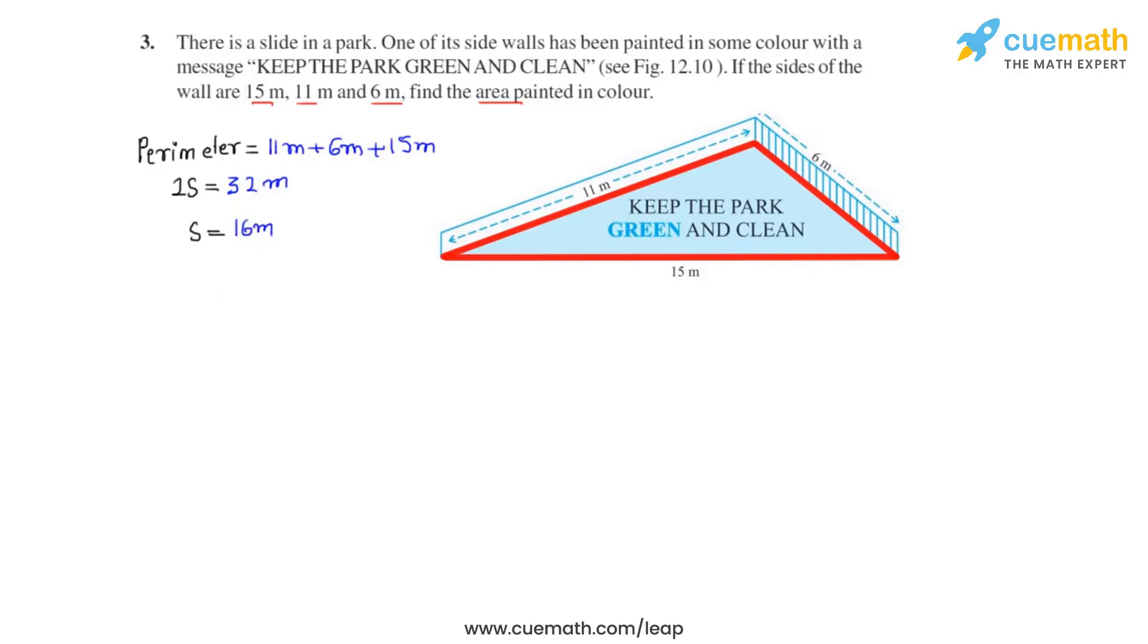Now let's write the Heron's formula by which we can calculate the required area. We write a equals under root s times s minus a times s minus b times s minus c meter square, where s is the semi-perimeter and a, b, c are the three sides of a given triangle.